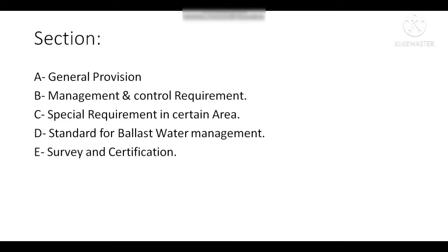In this convention there are five sections: Section A is General Provisions, Section B is Management and Control Requirements, Section C is Special Requirements in Certain Areas, Section D is Standards for Ballast Water Management, and Section E is Survey and Certifications.